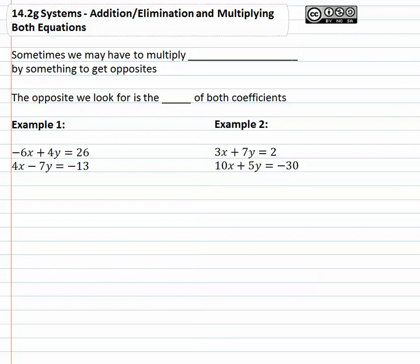When we're using addition or elimination to solve a system of equations, our goal is to get opposites in front of one of the variables. If we have opposites, they'll subtract out to zero and we can find out what value for x and what value for y makes both equations true.